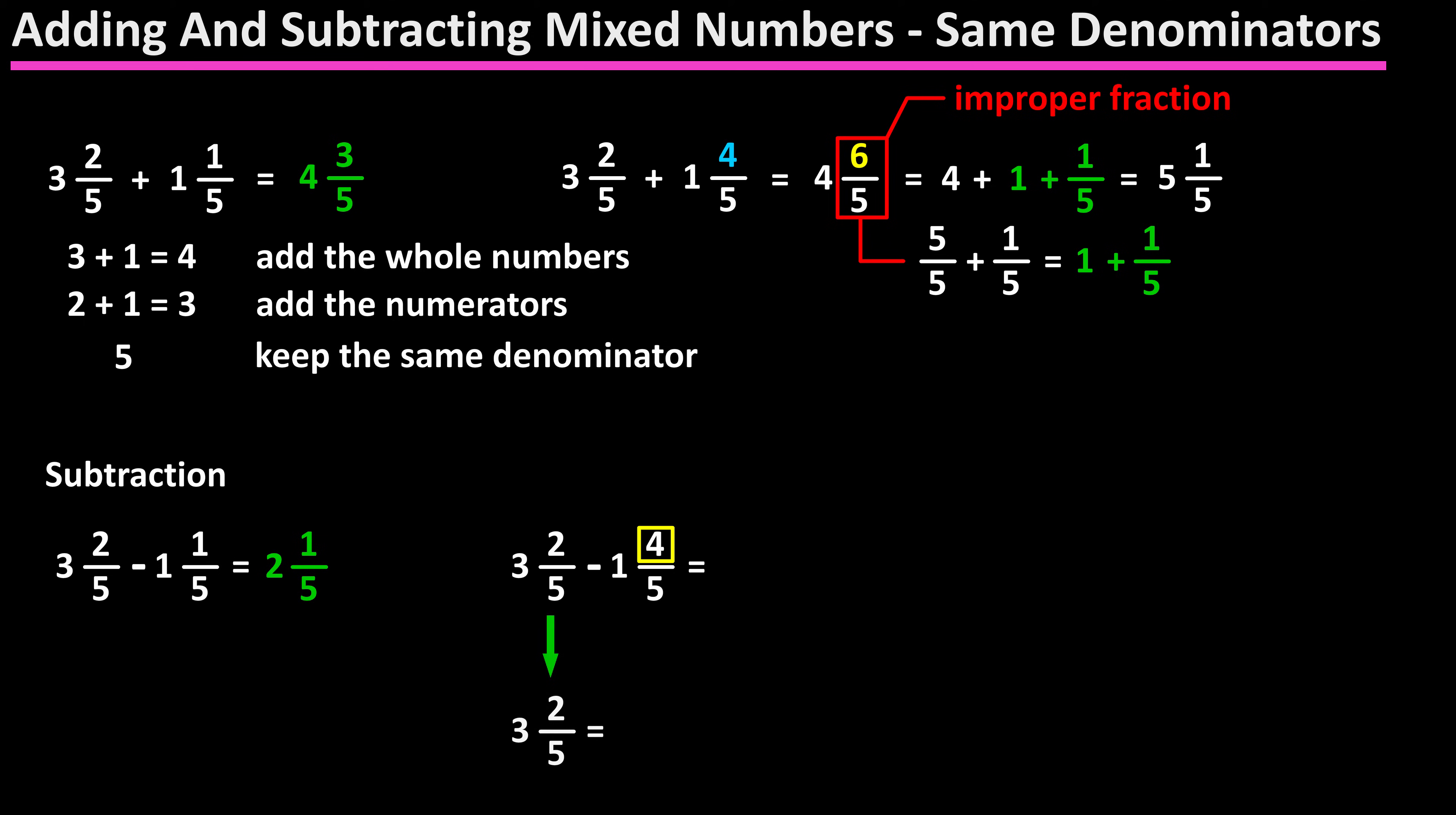and one concept to understand about mixed numbers is that they can be viewed as addition, so 3 and 2 over 5 is 3 plus 2 over 5. So borrowing from the 3 gives us 2 plus 1 plus 2 over 5, which we can write as 2 plus 5 over 5 plus 2 over 5, which is 2 and 7 over 5.